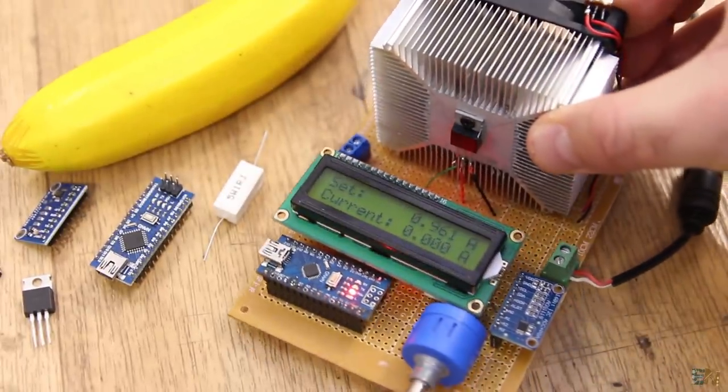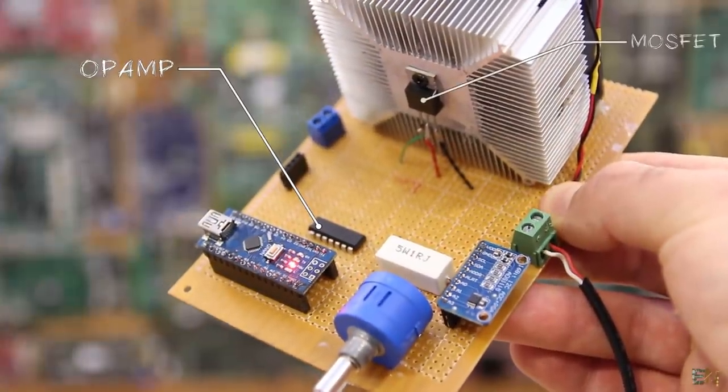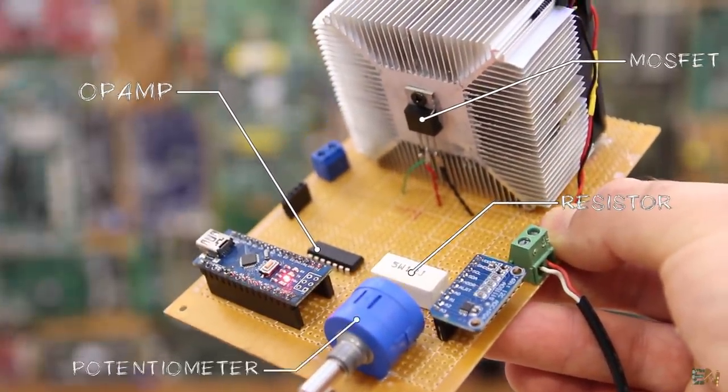This is a homemade constant load controller with an analog circuit made with an op-amp, a MOSFET, a power resistor, and a potentiometer.